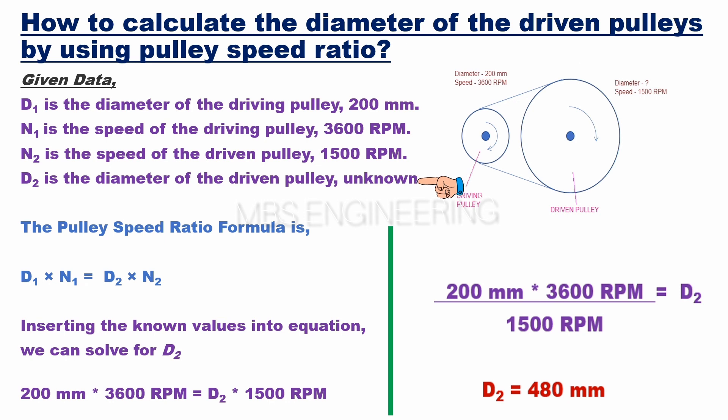Now, let's use the pulley speed ratio formula to calculate D2. D1 multiplied by N1 is equal to D2 multiplied by N2. Substituting the known values, we get 200 mm into 3600 RPM equals D2 into 1500 RPM.